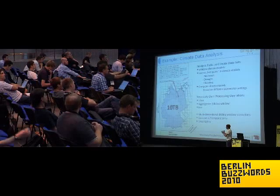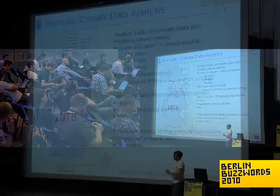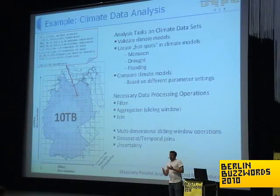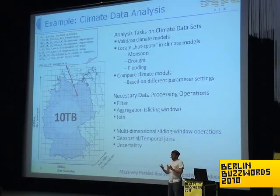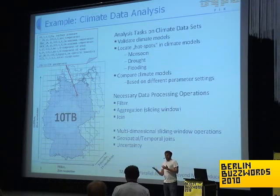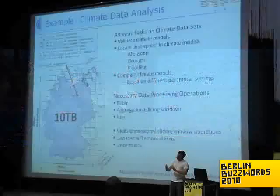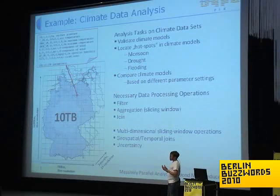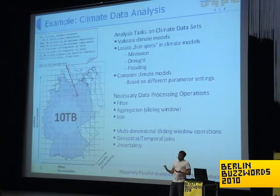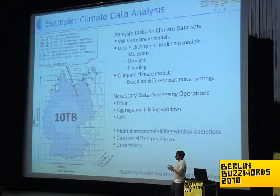They're trying to analyze those data cubes and find, for example, hot spots within the data cube — droughts or floodings that were simulated — try to validate whether the simulation produced valid results, and also try to compare different climate models, possibly from multiple simulations with different parameters or having a real data set and simulating the past. The operations they need include basic operations like filtering, projection, and joining, but also more complex operations, for example sliding window operations or temporal and geospatial joins. Finally, they also need to handle the uncertainty that comes with simulating that data.